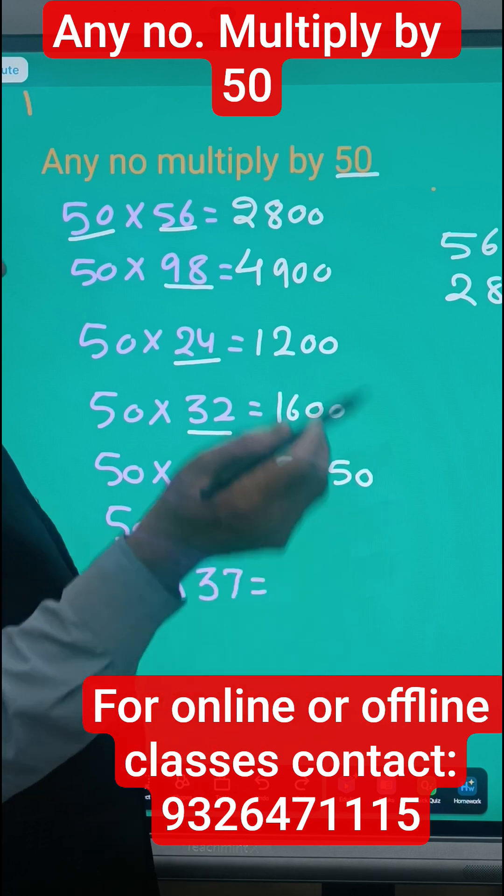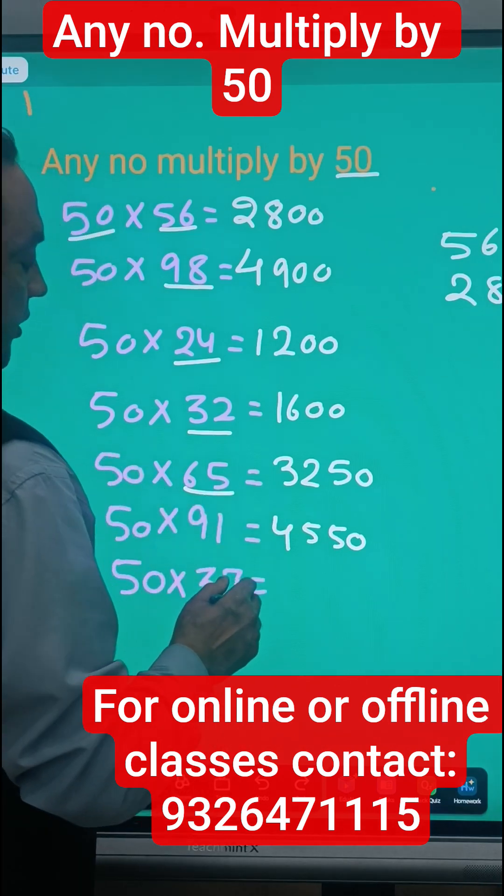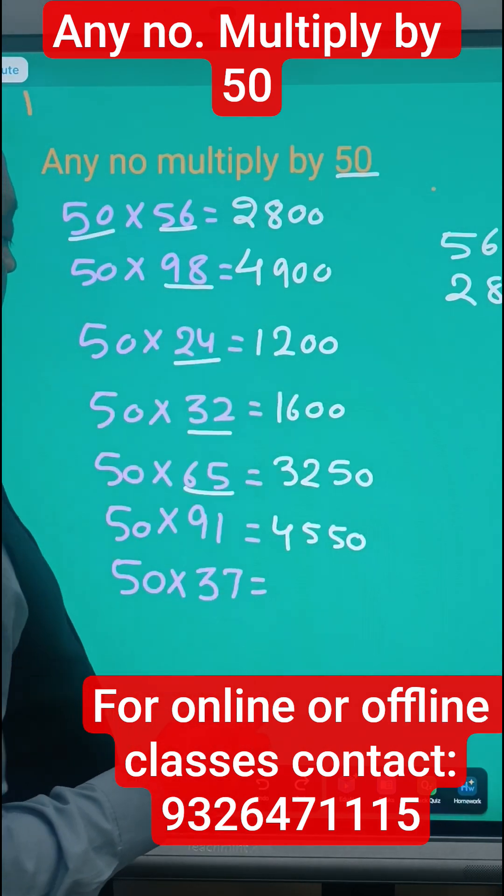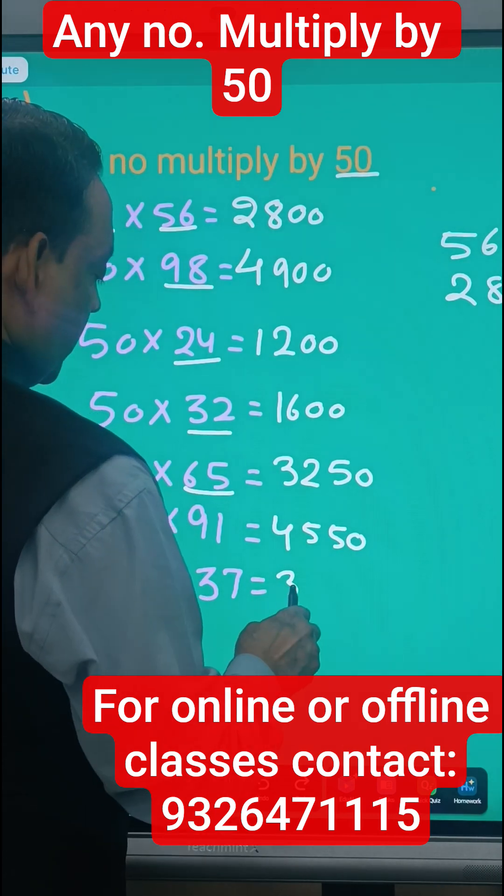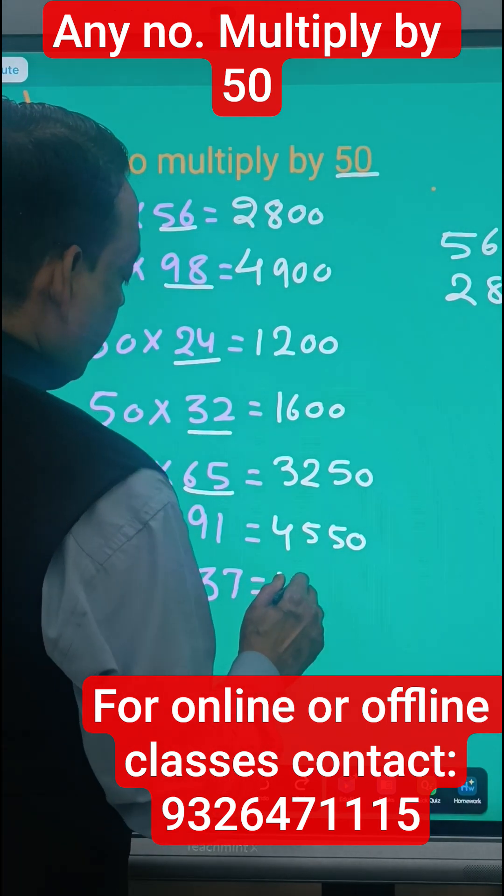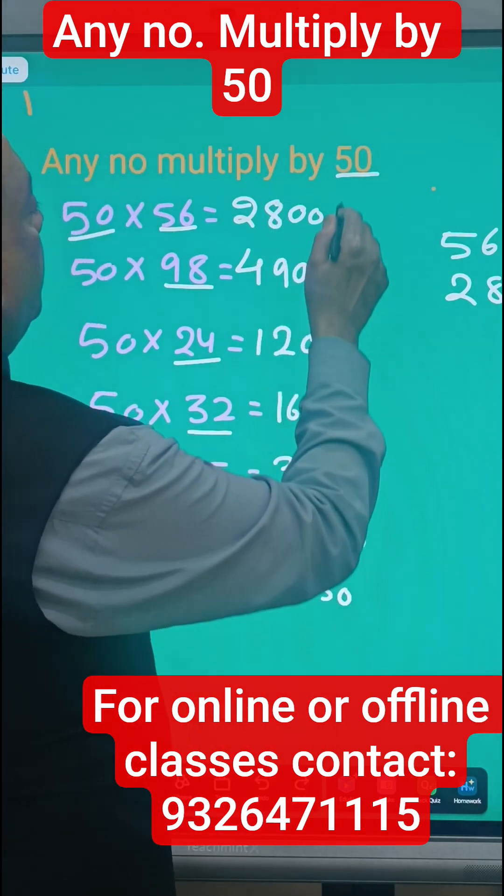Same way, 37 will take the 36. 36 ka half is 18, so this will be 1850. So whatever the number given multiply by 50, if it is even number, just take the half and multiply by 100.